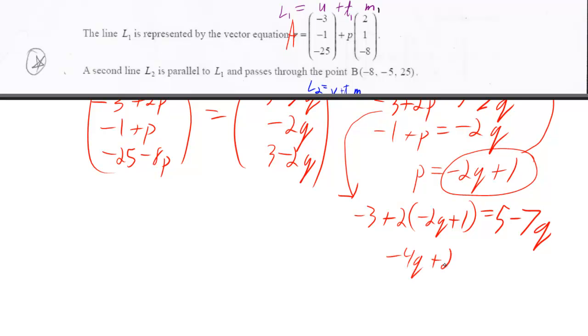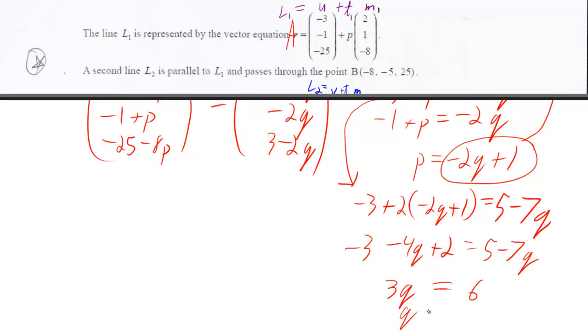And let's go through and solve it for q. Minus 4q plus 2, there's a minus 3 out there, equals 5 minus 7q. Add 7q to both sides and I get 3q. This becomes a minus 1 and I'll add it to the other side and it becomes a 6. And I get q is equal to 2.